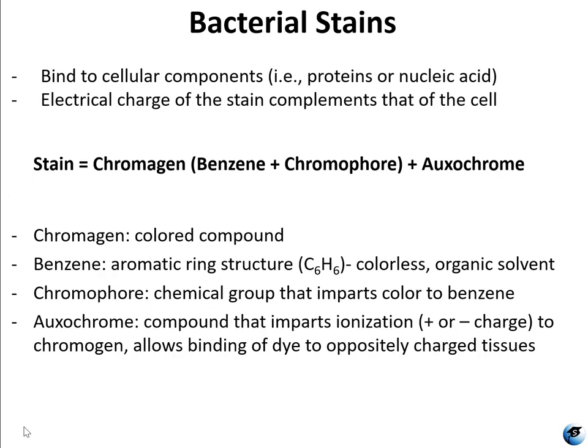Bacterial stains work by binding to cellular components — proteins, nucleic acids, and lipopolysaccharides. This is possible due to the electrical charge of the stain, which complements the charge of the cell. Stains are made up of a chromogen, which is a benzene ring plus a chromophore that imparts the color, and an oxychrome. The oxychrome has an ionic charge which allows binding of the dye to oppositely charged cellular components.